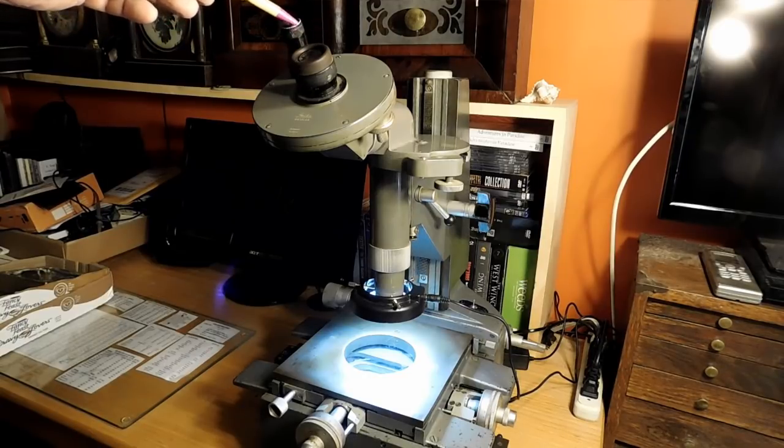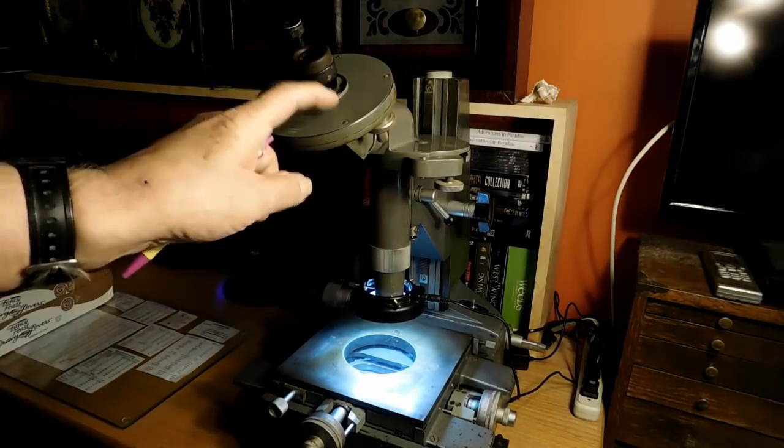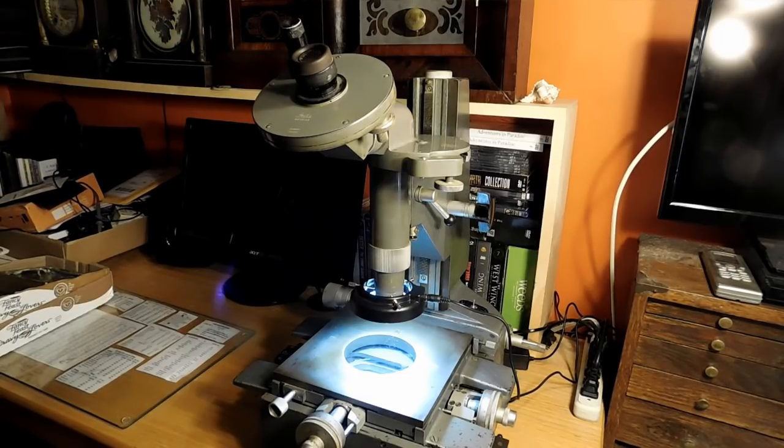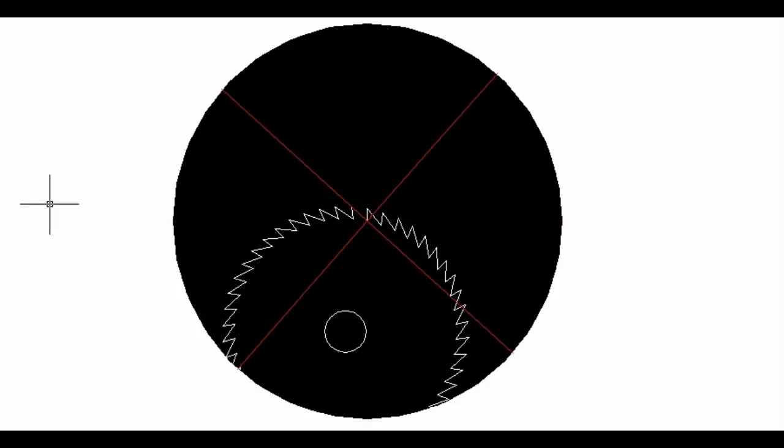The second thing that we want to do now that we know how many teeth we have is we want to get the angle of the teeth. You'll notice up here on the eyepiece we have an eyepiece here and then we have another eyepiece over here. This eyepiece here is a vernier and we'll use this to turn the vernier scale that's inside here on the graticule, and we can measure it up there in that eyepiece, and that's how we'll get our angle.